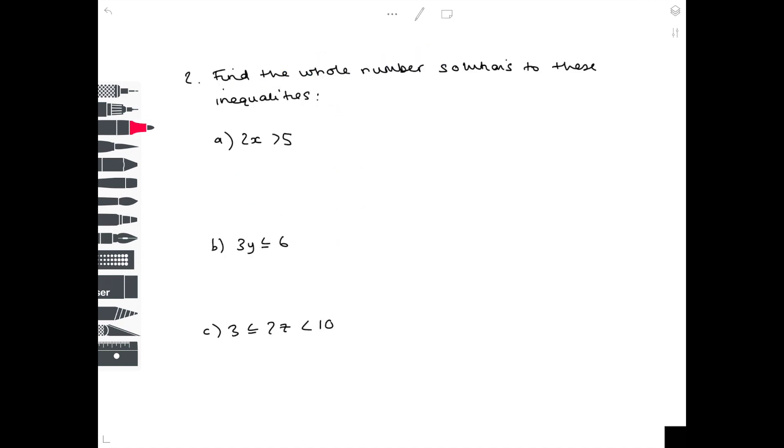Getting slightly more difficult now. Find the whole number solutions to these inequalities. It's a bit like solving simple equations now because we have 2x has to be greater than 5. So let's solve for x first of all. Divide 5 by 2 to get the fact that x has to be greater than 2.5. And we're looking for whole number solutions, so a number greater than 2.5 which is a whole number is obviously 3, 4, 5, 6, 7, and you could go on with that.